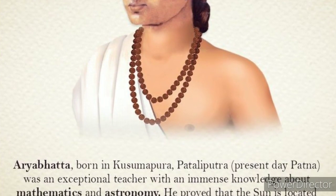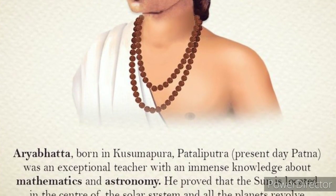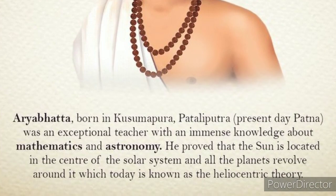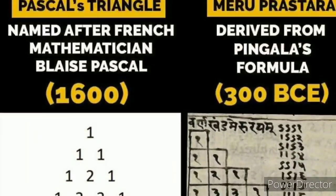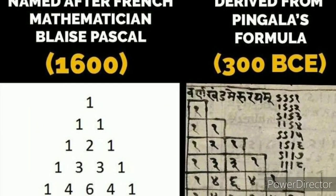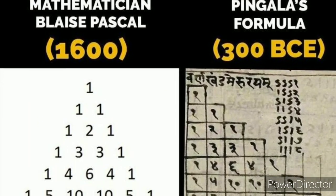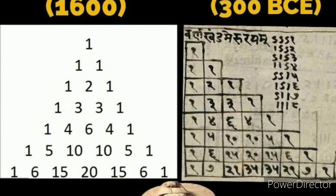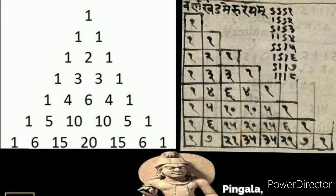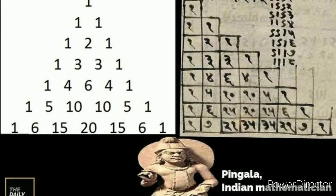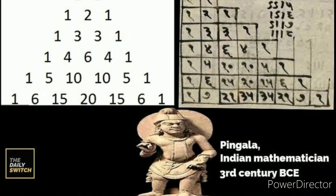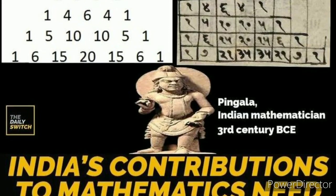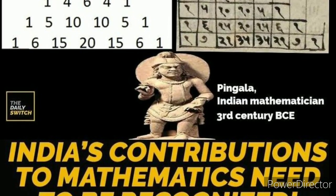Born in Pataliputra, Magadha, he is regarded as one of the greatest mathematicians of all time. His famous works include the Aryabhatta, whose mathematical parts consist of topics on algebra, trigonometry, arithmetic, continued fractions, sum of power series, quadratic equations, and sine tables.